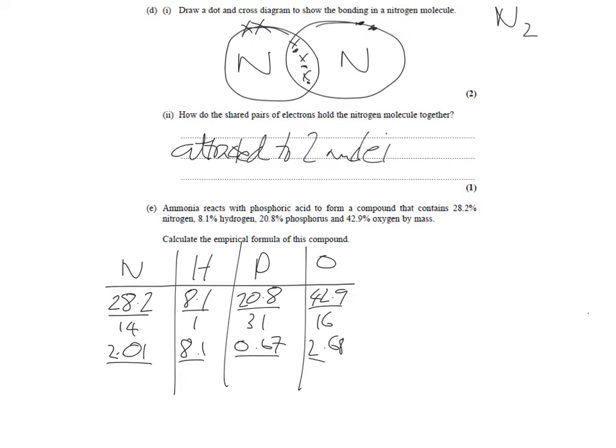So, we divide each one by the smallest number. And the smallest number here is 0.67. So, we'll divide each one by 0.67. And that gives us 3, 12, 1, and 4. And then, obviously, we have to convert those numbers to a formula. So, you've got N3H12PO4. And that's the final part of that question. So, let's go on.